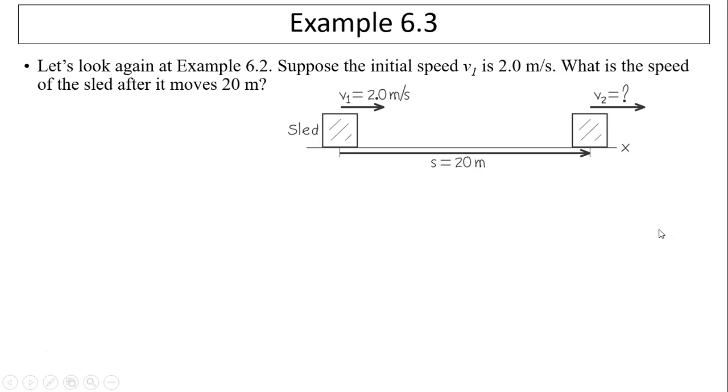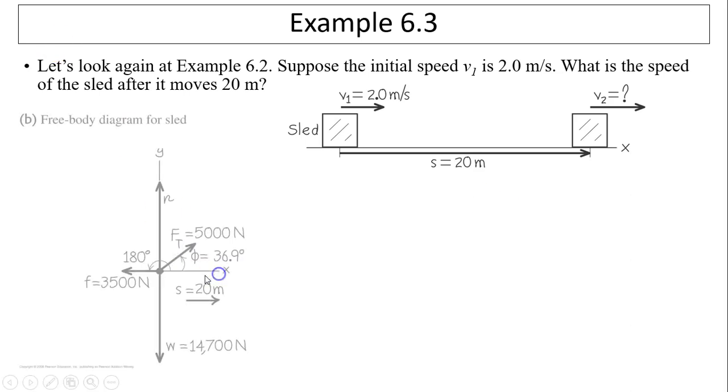Let's take a look at this example. Remember the last example in the last video, we have a farmer is pulling a sled. So this is the same example. Suppose the initial speed V1 is 2 meters per second. What is the speed of sled after it moves 20 meters?